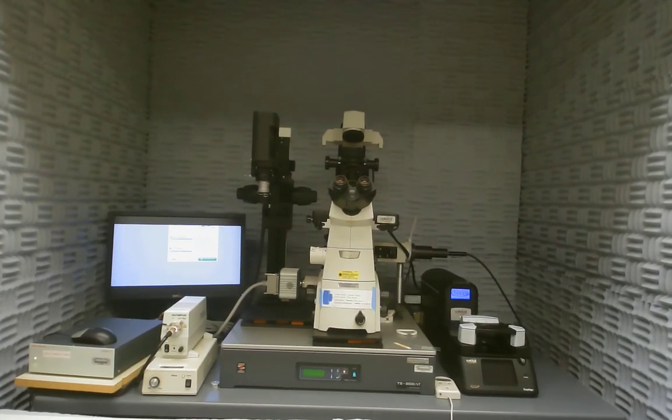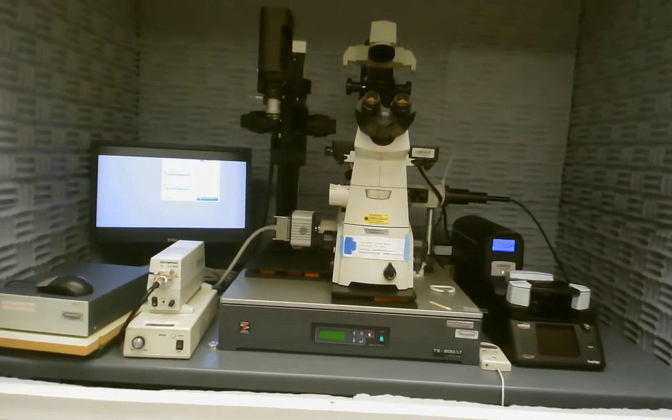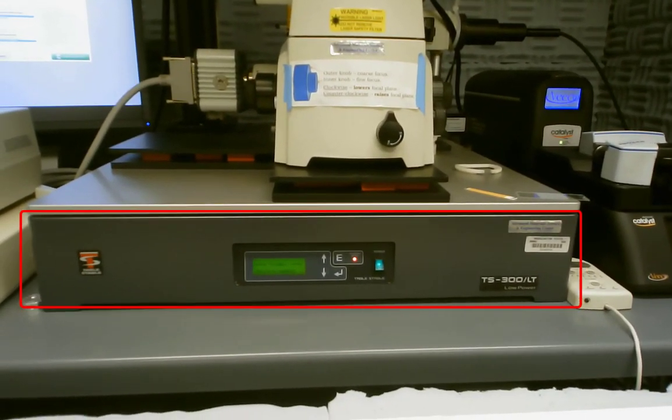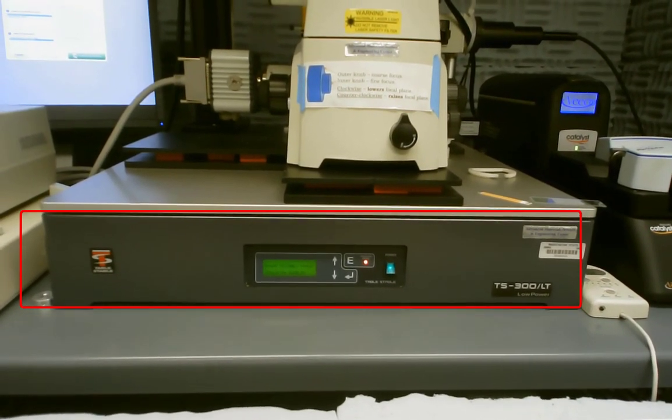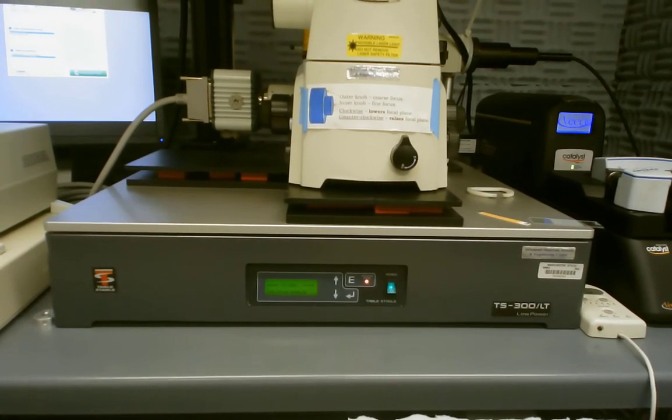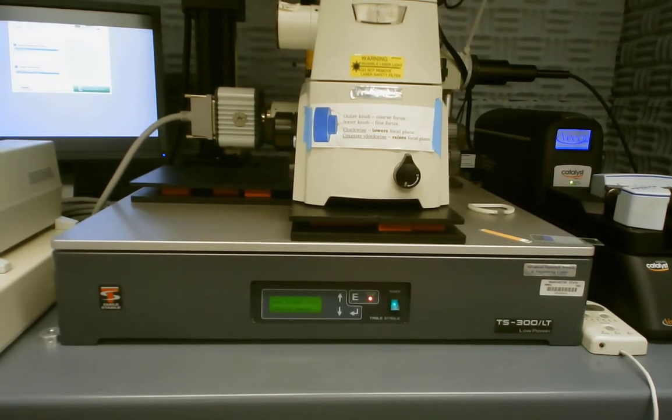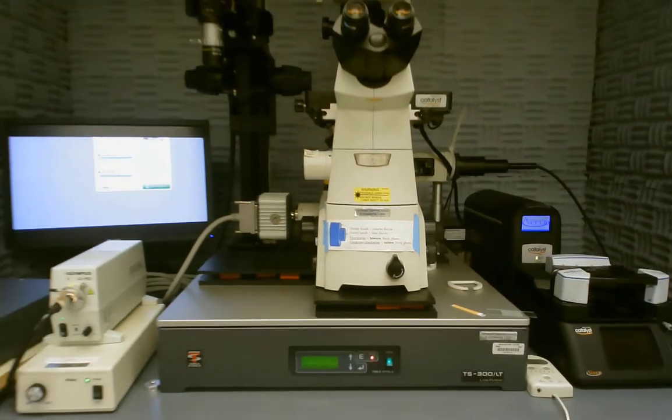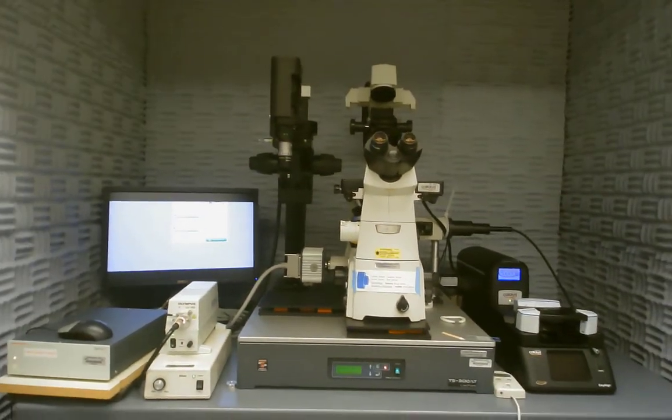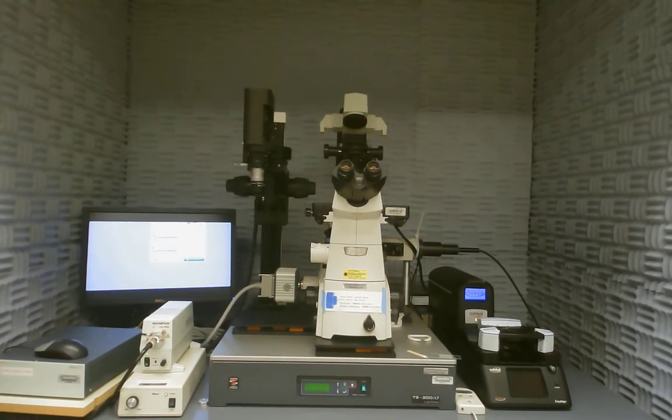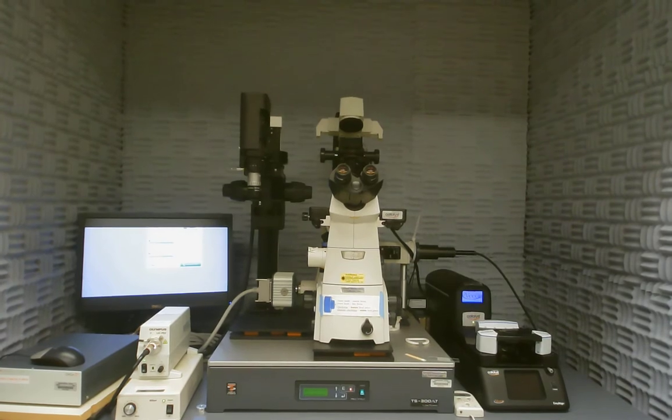Another thing to notice is that the system is set upon a vibration isolation table. So this isolates the system from any vibrations that the building may be contributing so that they don't affect our measurements. AFM measures very, very, very small features on the order of nanometers. And therefore any vibrations may affect our measurements greatly.